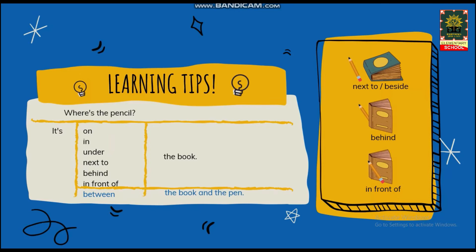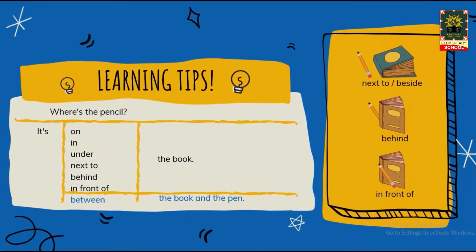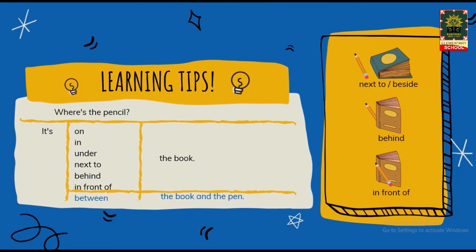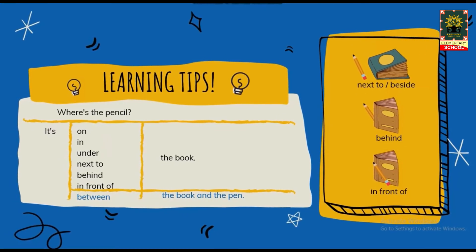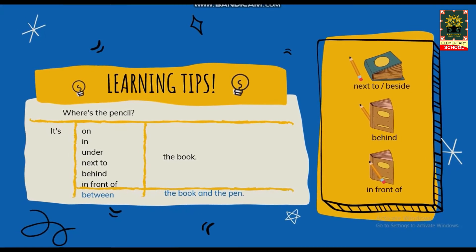Selanjutnya. Where's the pencil? It's behind the book. Di mana pensilnya? Pensilnya ada di belakang buku. Contoh yang terakhir: Where's the pencil? It's in front of the book. Karena pensilnya ada di depan buku.